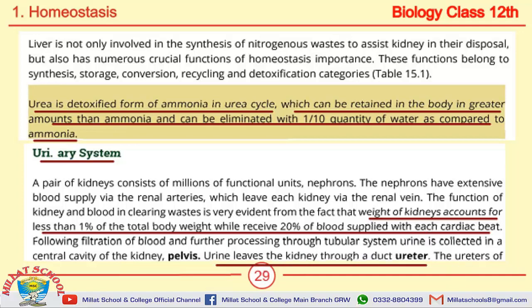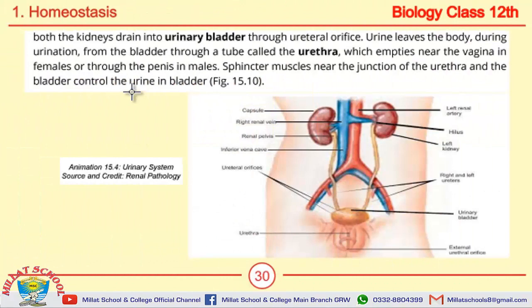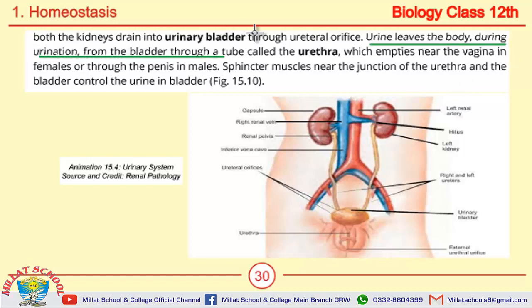This is also an important MCQ. Define urethra: urine leaves the body during urination from the bladder through a tube called the urethra, which empties near the vagina in females or through the penis in males.